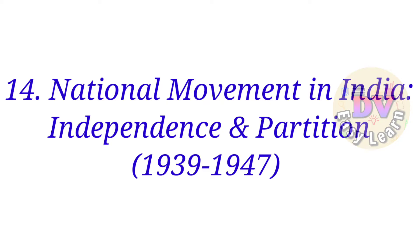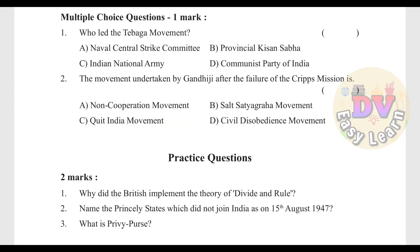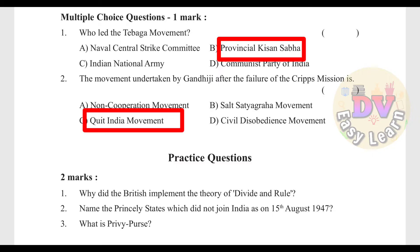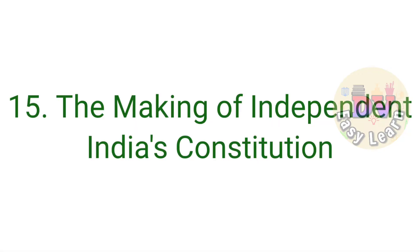Chapter 14: National Movement in India — Partition and Independence (1939–1947). Question 1: Who led the Tebhaga Movement? — Answer: Provincial Kisan Sabha. Question 2: The movement undertaken by Gandhiji after the failure of the Cripps Mission — Answer: Quit India Movement.